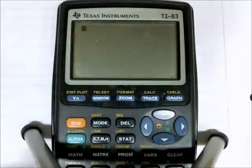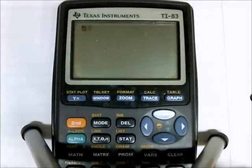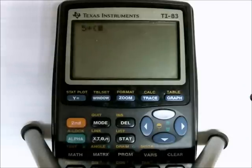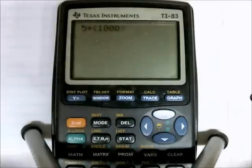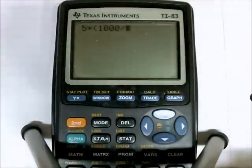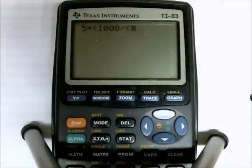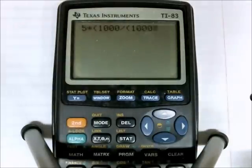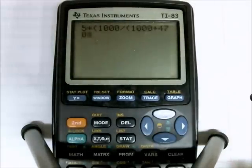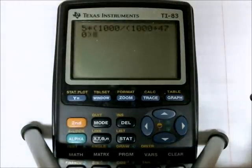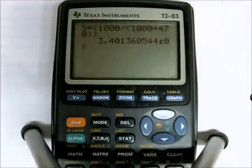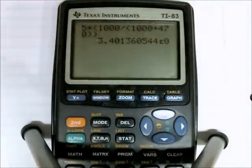And let's do those calculations. So 5 times R1, which was 1,000 ohms, divided by 1,000 plus 470. So the voltage across R1 is equal to 3.4 volts.